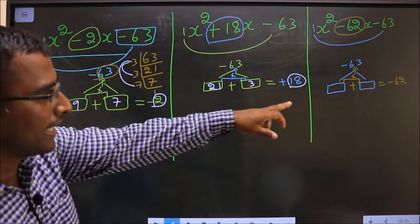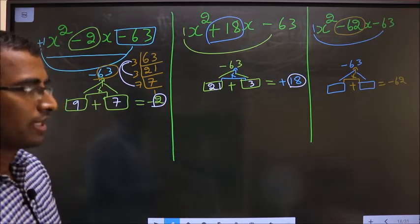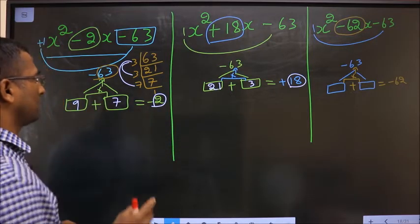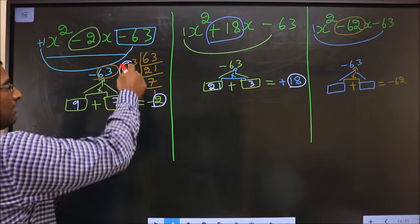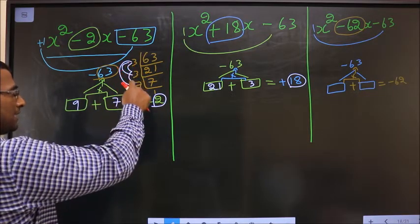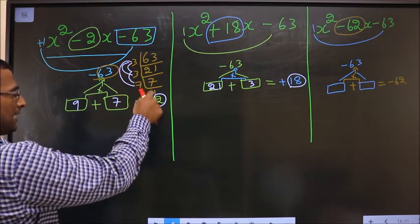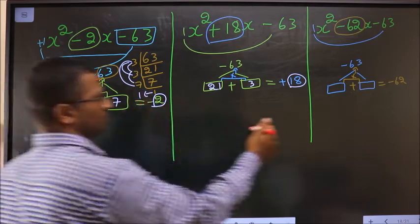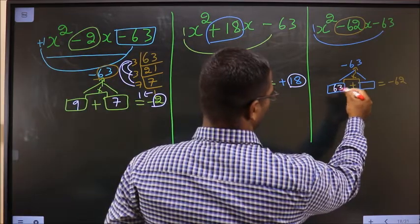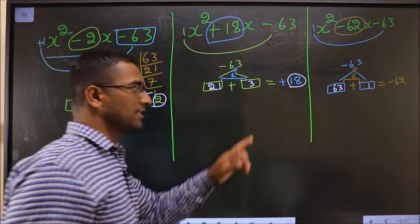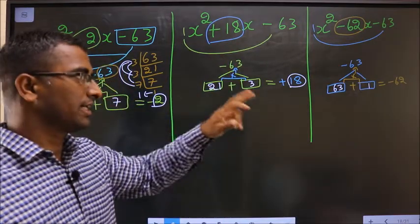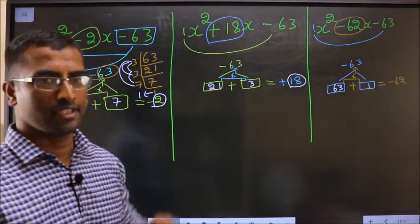For the third expression, I should get 62. That could only happen if the two numbers are 3×3×7=63 and 1, since 63 minus 1 is 62, and 63 into 1 is 63.